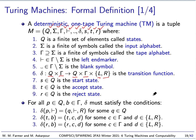Delta can be almost anything — we're very free in what delta can be. The only requirements are: if we're in some state and we're looking at the left end marker, we must not overwrite it and we must move right. Whenever we get to the left end marker, we have to leave it there and move right. The other condition says that once we're in the accept state, we stay in the accept state — we can never get out of it. And if we end up in the reject state, we stay in the reject state.